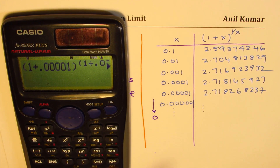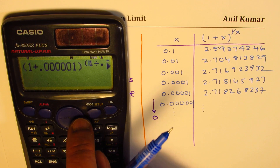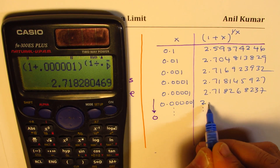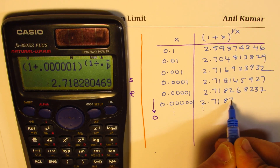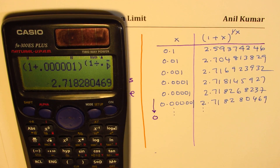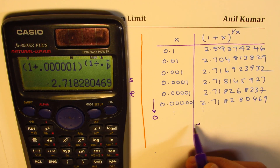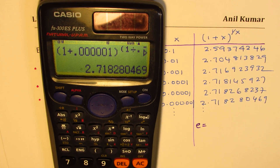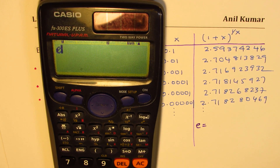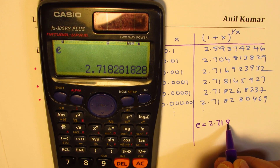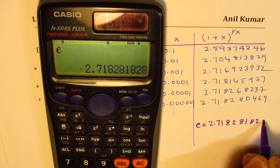The same formula is being applied many times. With one more zero we get 2.718...8280469. We got some value and I'm saying it approaches e. Let's find what the value of e is — on this calculator we do have e, and the value of e is 2.718281828.